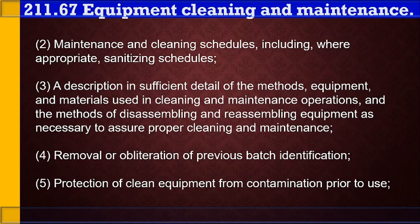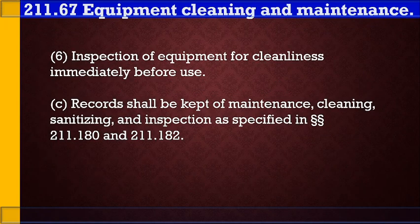The fourth point is removal or obliteration of previous batch identification. Fifth is protection of clean equipment from contamination prior to use — these are the checklist items when we are going to do cleaning or line clears for the batch. And the next is inspection of equipment for cleanliness immediately before use — this is just like line clearance.